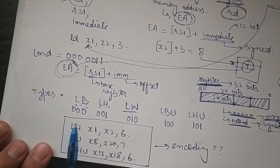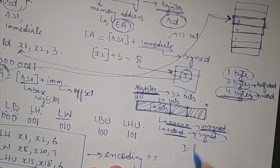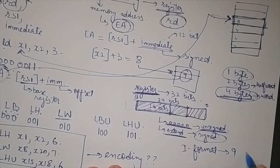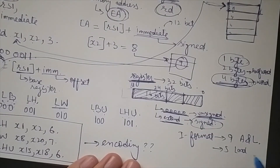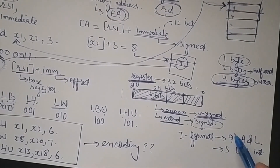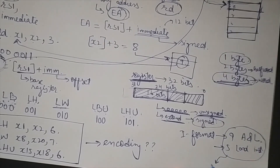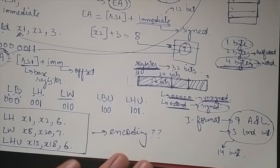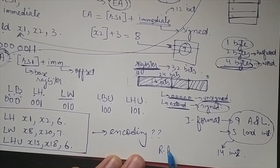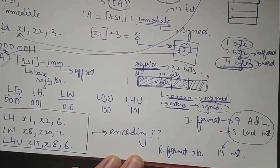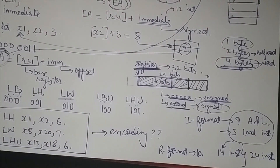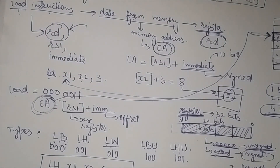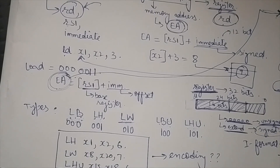That covers I-format load instructions. In the I-format, we learned about nine arithmetic and logical instructions and five load instructions, for a total of 14 I-format instructions. Combined with 10 R-format instructions, we have completed 24 instructions in total. In subsequent lectures, we will discuss other possible formats and their instructions. See you in the next lecture — goodbye.